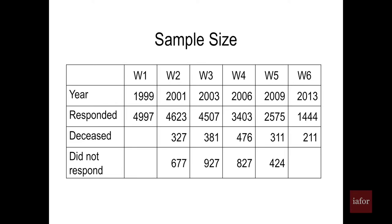In the first wave in 1999, I had 4,997 respondents — about a 75% response rate. For wave two, we followed up those 4,997 and added 900 for ages 65–66, for a total of 4,623. Among the original 4,997, 327 had deceased, leaving 4,037. By 2009 and 2013, the numbers were very small, partly because the mail survey response rate wasn't that great.